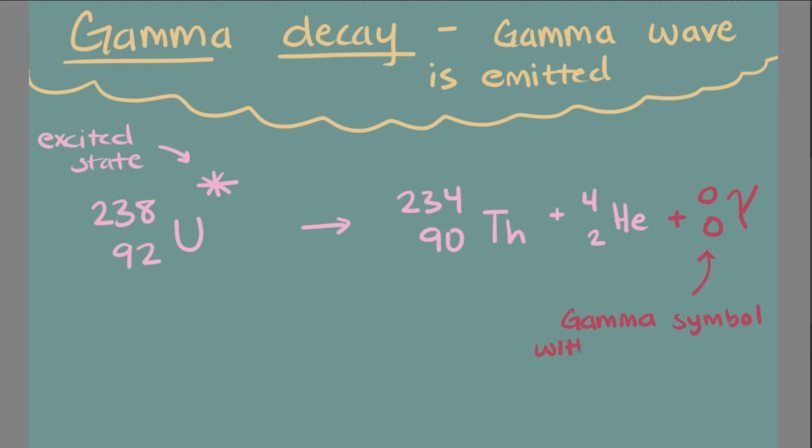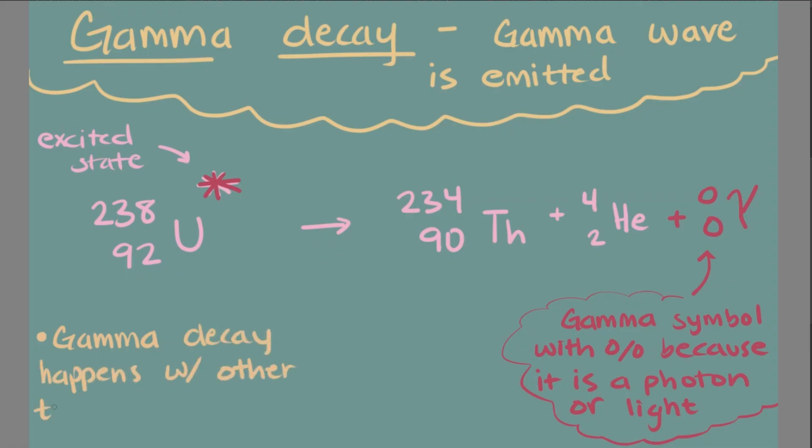For example, let's consider the original equation we used for alpha decay. If the uranium is in an excited state, it has the potential to emit a gamma wave, thus going through gamma decay. Atoms that emit this type of energy are still going through the other type of decay as normal. To indicate its gamma decay, the initial atom is starred and the ending result shows a gamma symbol.